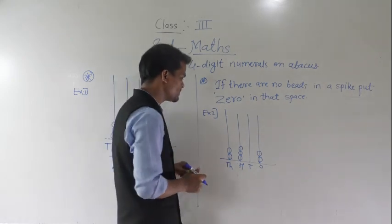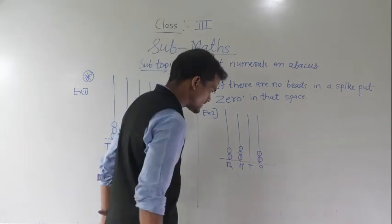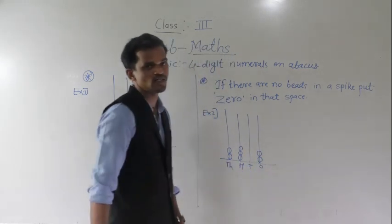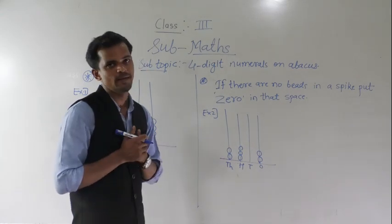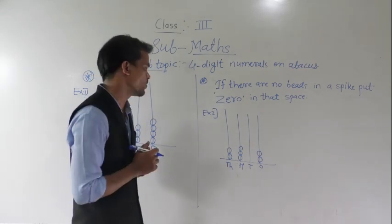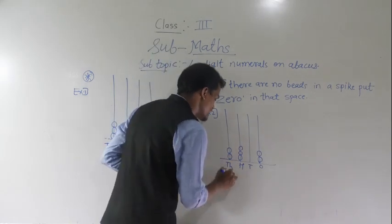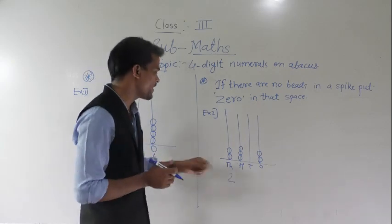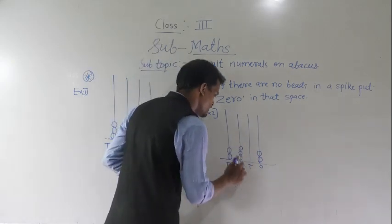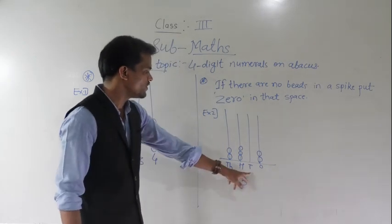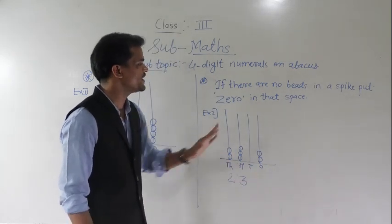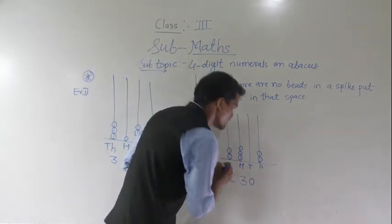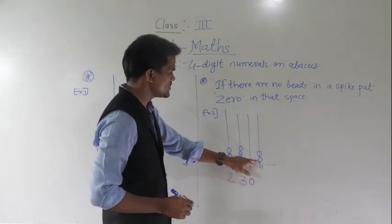Now see another example. Starting from the extreme right: ones place, tens place, hundreds place, thousands place. Count the beads and write the number. At the thousands place, two beads means two thousands. At the hundreds place, one, two, three beads means three hundreds. At the tens place, there are no beads, so put zero there.